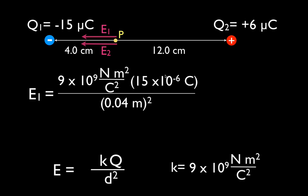A couple of things to point out: the charge is 15 microcoulombs, and we have to convert this to coulombs — we can't leave it as microcoulombs. This is 15×10⁻⁶ coulombs, which is the same as 15 microcoulombs. We had to put it in coulombs because our constant isn't in microcoulombs. Micro means 10⁻⁶; if it were nano it would be 10⁻⁹, pico 10⁻¹², milli 10⁻³. Also, we didn't put the negative sign in — we're calculating the magnitude of the electric field, so we put in the magnitude of the charge. The distance must be in meters: 4 centimeters is 0.04 meters.